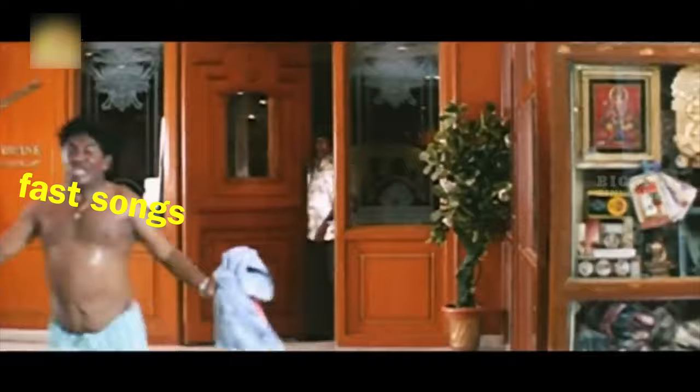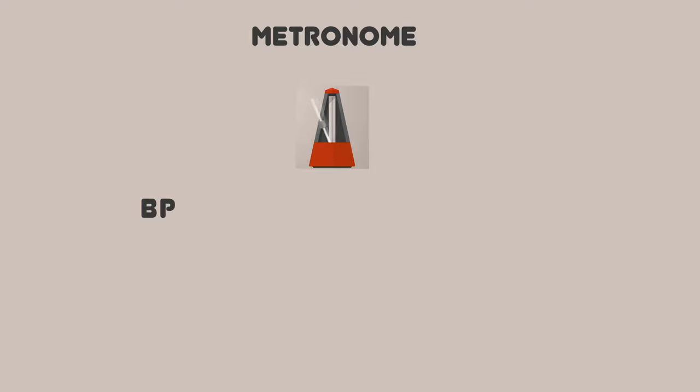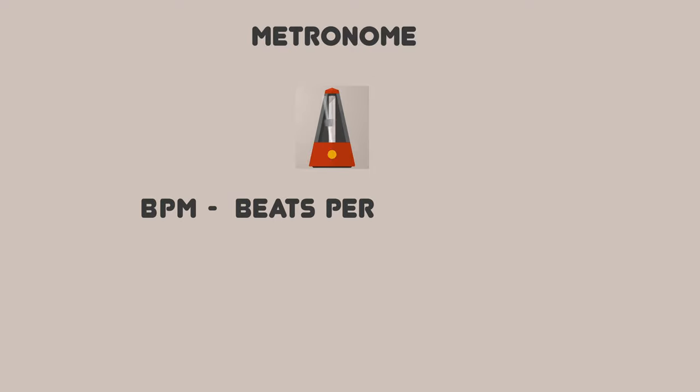In music, there are fast beats and slow beats. We describe the beat speed using the tempo. The tempo is measured using a metronome. In a metronome, there is BPM — beats per minute.